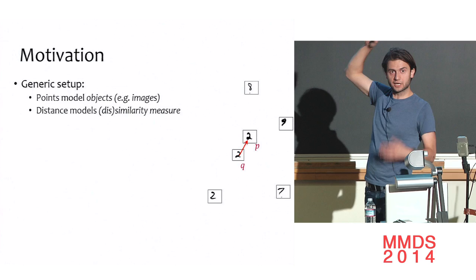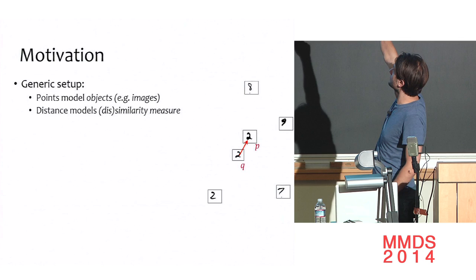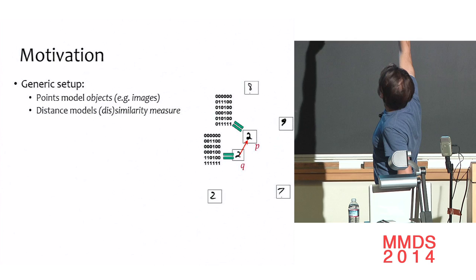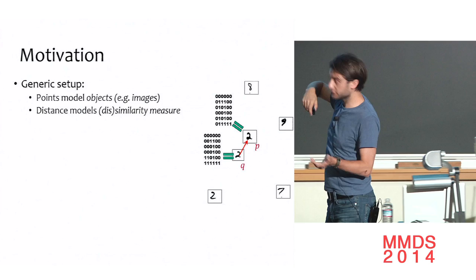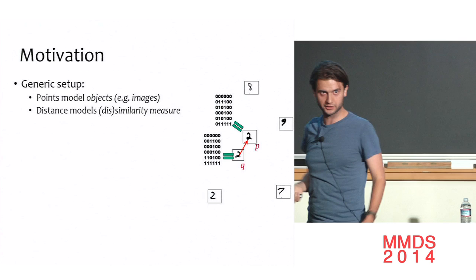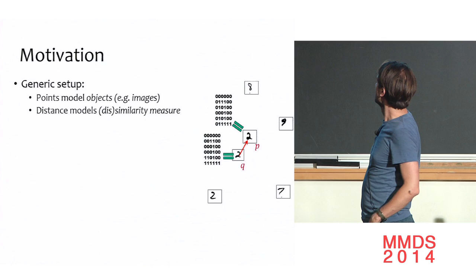The motivation is that we generally think about these points as being in high-dimensional space, because they represent some kind of objects. The problem models similarity search, where distance measures dissimilarity between points. For example, with MNIST handwritten images, you represent each image as a binary vector — roughly 36-dimensional — and check similarity via Hamming distance.